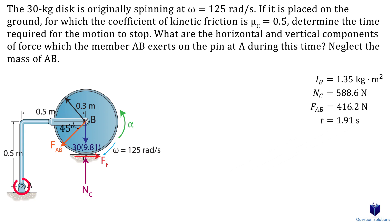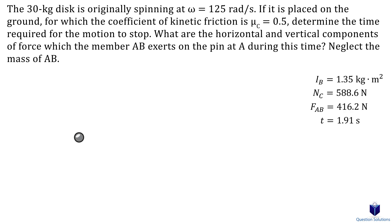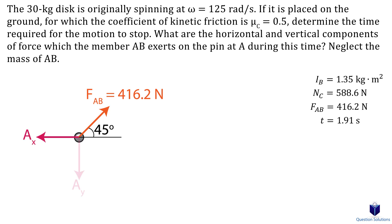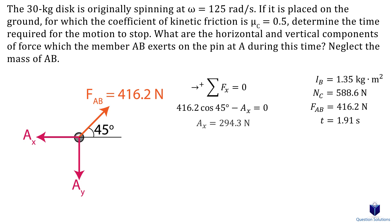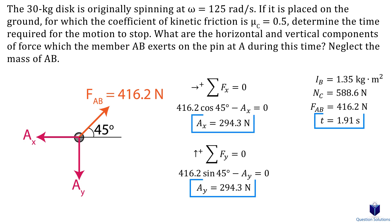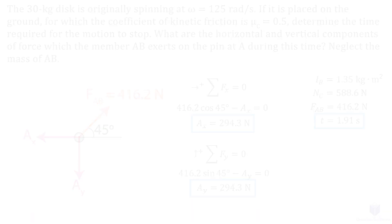For the reactions at point A, we draw a free body diagram of pin A. We have force Fb pointing toward the center of the wheel, along with horizontal and vertical reaction components at A. Since pin A does not move, we write equilibrium equations rather than equations of motion — forces at A sum to zero. For the horizontal direction: the x-component of Fab plus Ax equals zero, giving us Ax. For the vertical direction: the y-component of Fab plus Ay equals zero, giving us Ay.